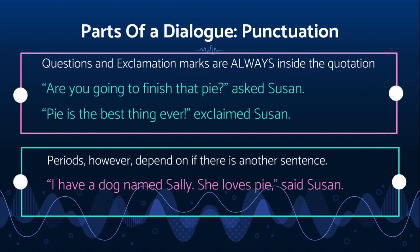The same thing applies to an exclamation point. You don't want to write 'pie is the best thing ever' exclaimed Susan — you want Susan to exclaim 'pie is the best thing ever.' And periods depend on whether there's another sentence. For example, 'I have a dog named Sally' — if we were just going on that, you would use a comma because there are more words afterwards. But since there's another sentence, it's just 'I have a dog named Sally.' with the period inside the quotation mark. Now, if 'said Susan' were behind the quotation marks, then it would end in a period.